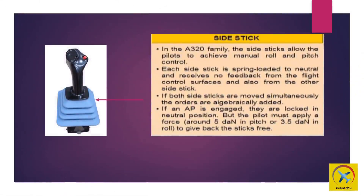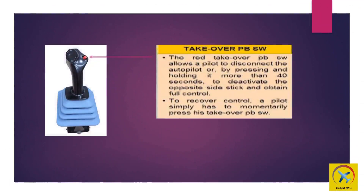In the A320 family, the side stick allows pilots to achieve manual roll and pitch control. Each side stick is spring-loaded to neutral and receives no feedback from the flight control surfaces or from the other side stick. If both side sticks are moved simultaneously, the orders are algebraically added. If an autopilot is engaged, they are locked in neutral position, but the pilot must apply a force of around 5 daN in pitch or 3.5 daN in roll to give back the sticks free.